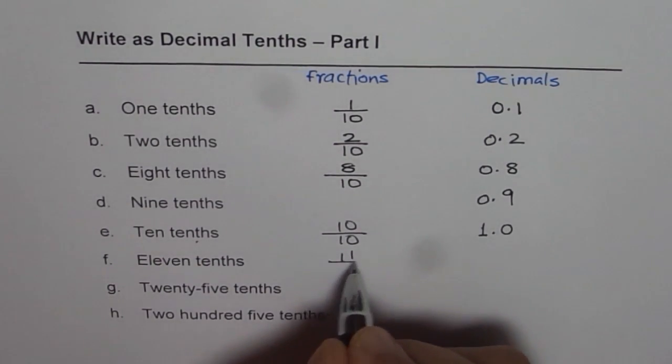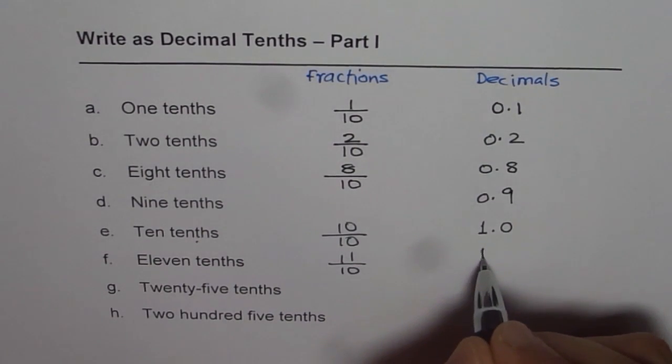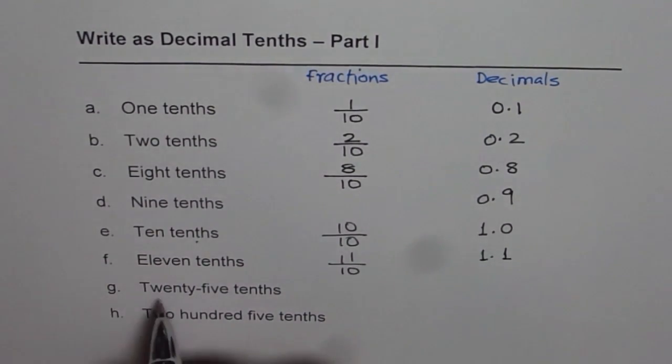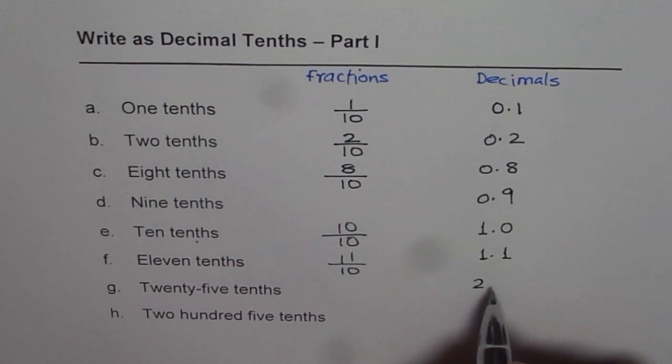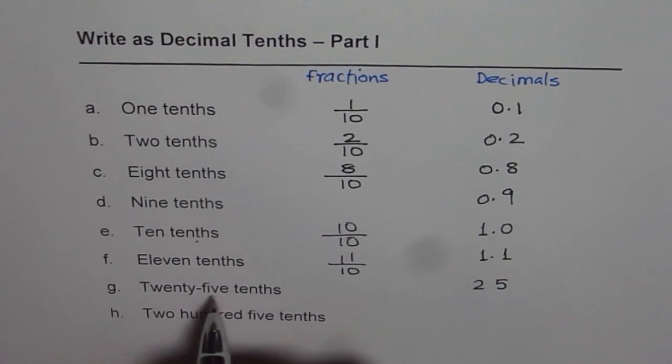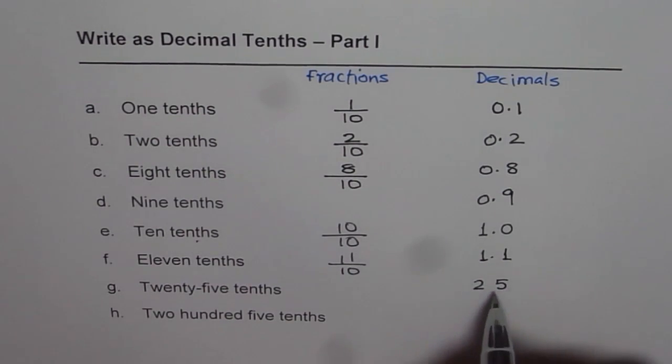Eleven-tenths will be eleven over ten, which is one point one. Twenty-five tenths. So we are looking at number twenty-five. That is twenty-five. And tenths means you divide by ten. So one decimal comes here. That is another way of looking into it.